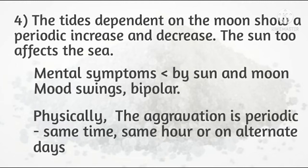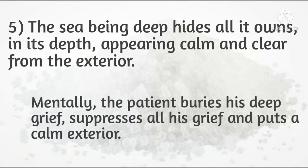Fourth: the tides, dependent on the moon, show a periodic increase and decrease; the sun too affects the sea tides. Just the same way, in the Natrium personality, mental symptoms are aggravated by sun and moon, and there are mood swings — bipolarity, meaning two extremities of emotions, is seen here. Physically, the aggravation is periodic at the same time, same hour, on alternate days.